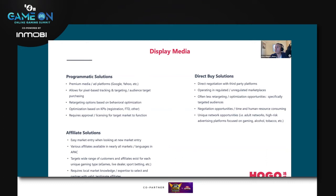Jumping into display media — there are three key areas: programmatic solutions, direct buy, and online affiliates. Programmatic solutions primarily involve ad platforms such as Google and Yahoo, which allow for pixel-based tracking and targeting. When you run ads in a regulated market through one of these platforms, you're able to target very specific audiences based on the players you're trying to acquire, and retarget those audiences based on behavior.